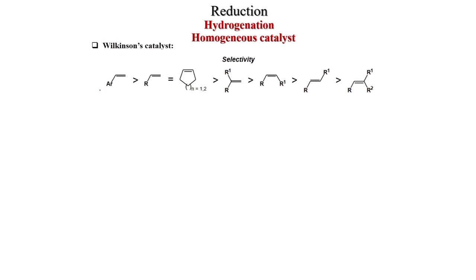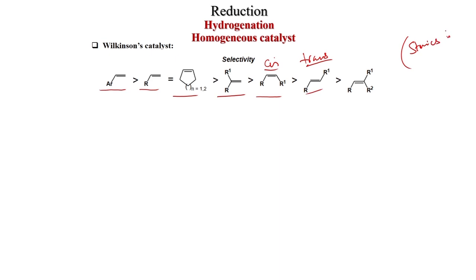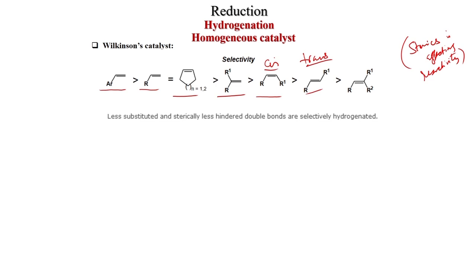Reactivity order for alkenes with Wilkinson's catalyst: styrene derivatives are most reactive, then monosubstituted olefins, then cyclic olefins, then 1,1-disubstituted olefins, then 1,2-disubstituted olefins (cis more reactive than trans), then trisubstituted. Steric factors affect reactivity — highly substituted or sterically hindered double bonds cannot coordinate to the catalyst. Less substituted and sterically less hindered double bonds are selectively hydrogenated.